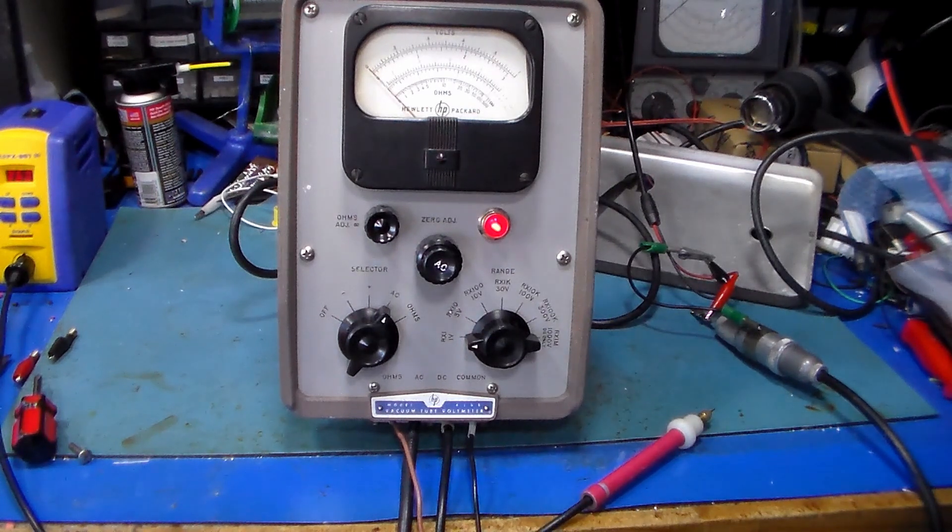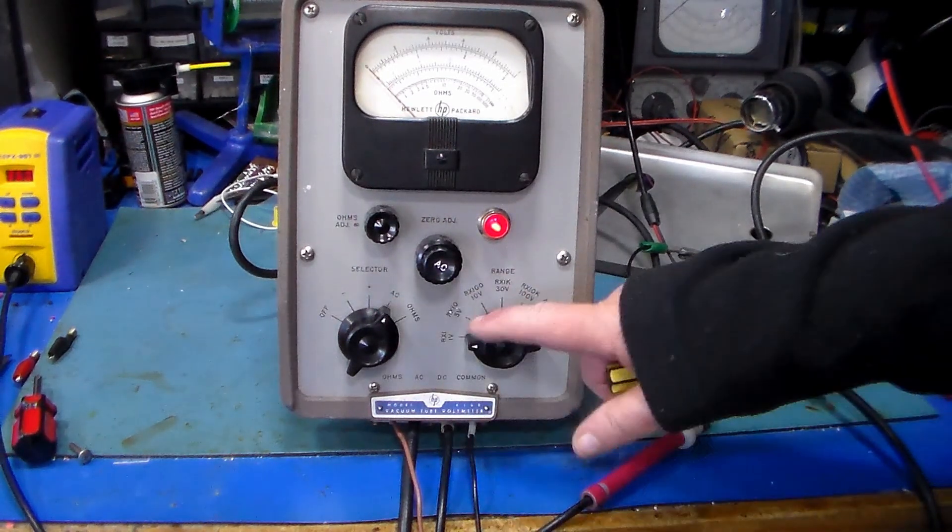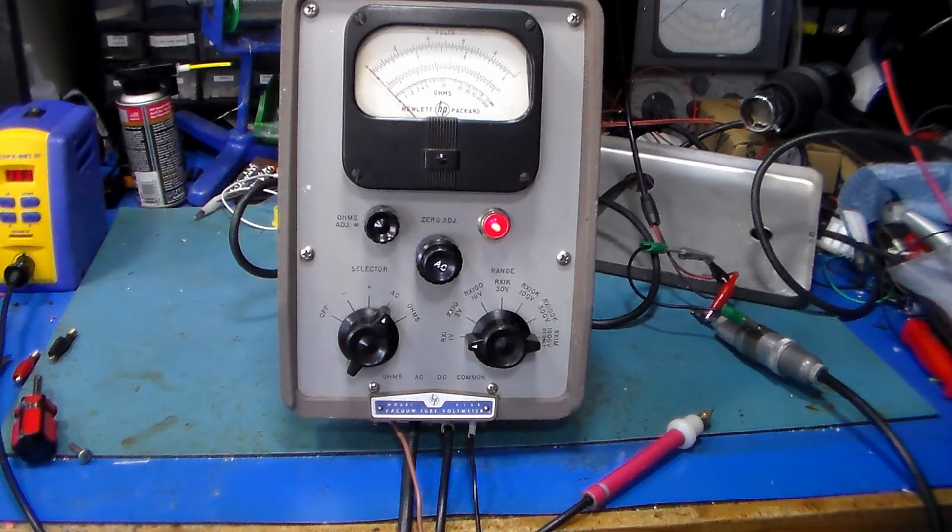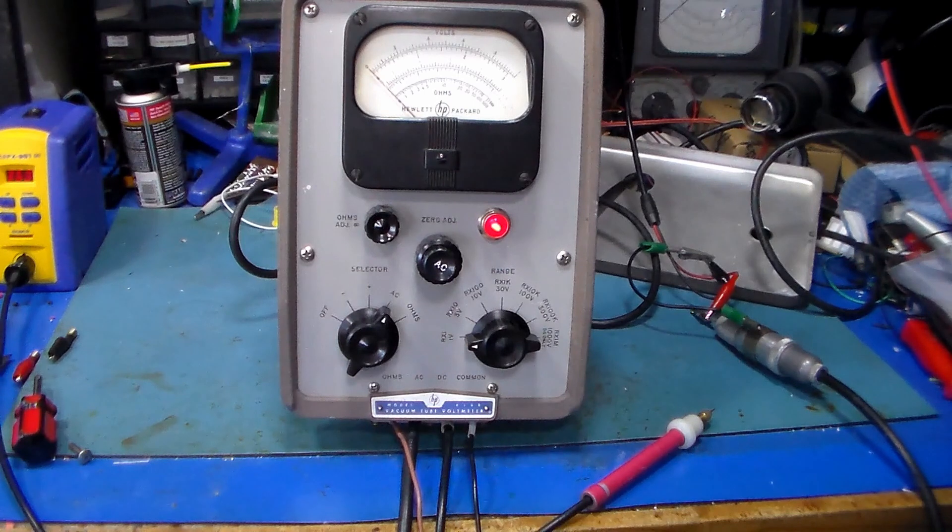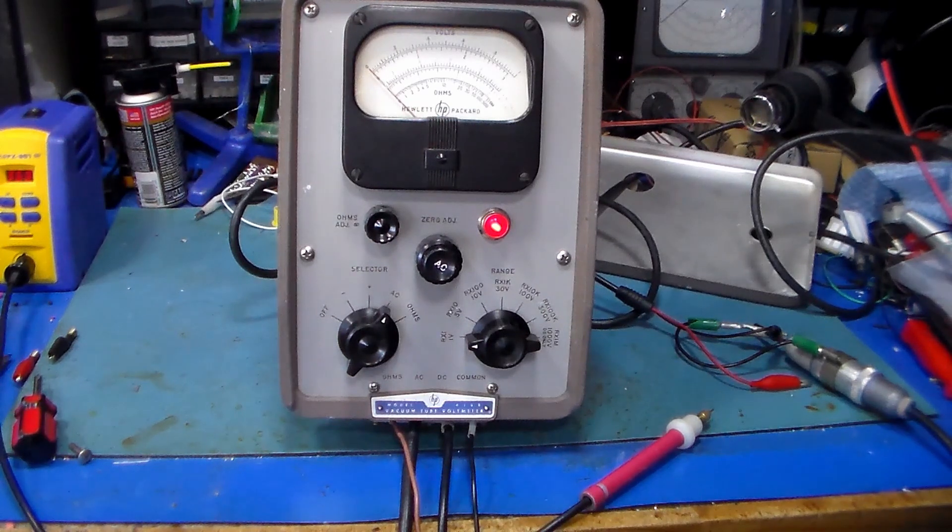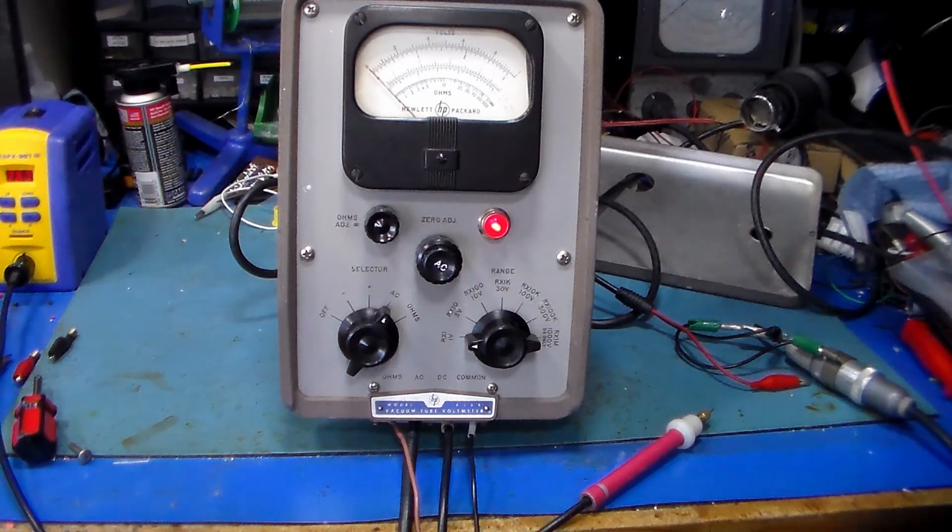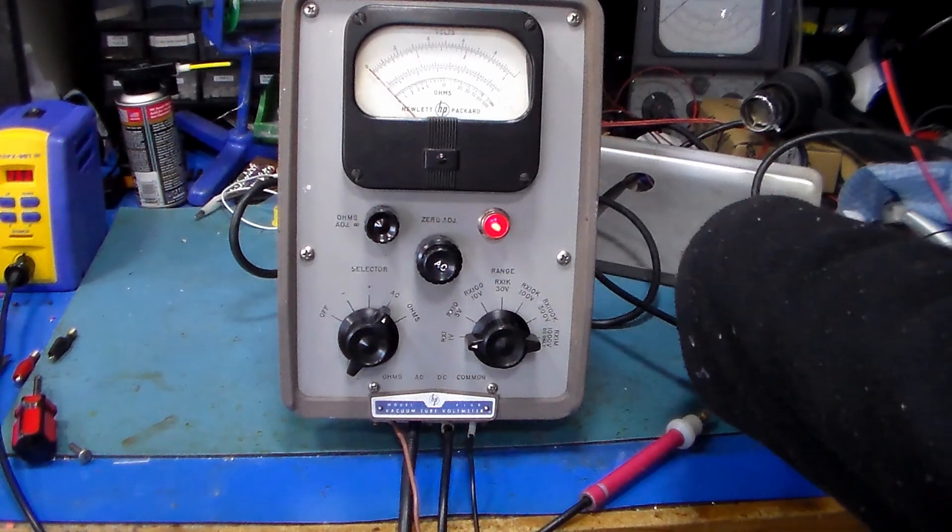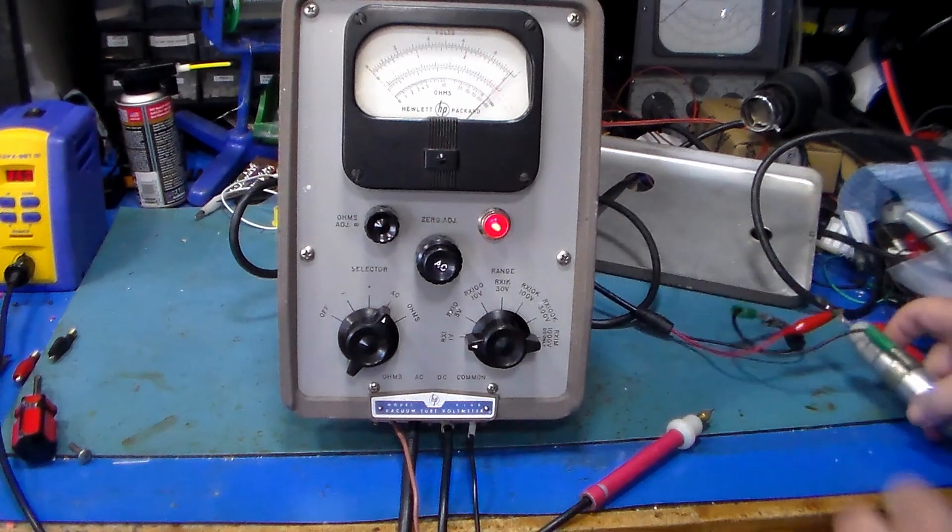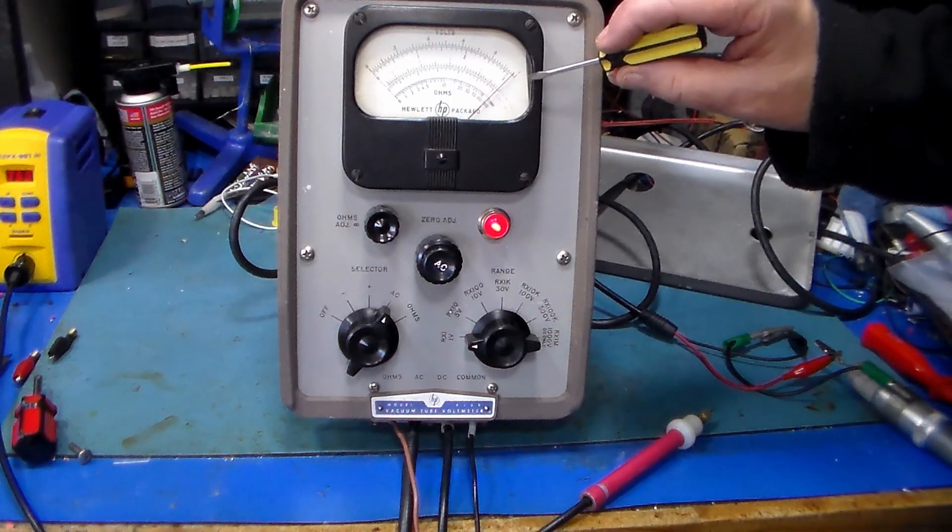After adjusting zero on the DC range, we switch over to AC and 1 volt. I've got 0 volts actually applied to the instrument. I set 1 volt output, take the short off and connect our input. As we can see, we're running just slightly low now on the 1 volt range.